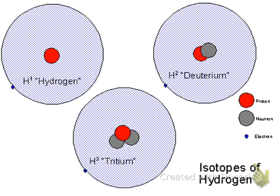Hydrogen has three isotopes common enough to be named, though they don't heavily affect the atomic mass since it's 1.008. The most abundant version is H-1: one proton, no neutrons. There is a hydrogen with one neutron called deuterium, H-2. There's a third called tritium — not super common — with one proton and two neutrons. Notice that the one thing not changing across hydrogen's isotopes is the number of protons, because if you change the protons, you change the element. Adding a proton to hydrogen makes it helium.